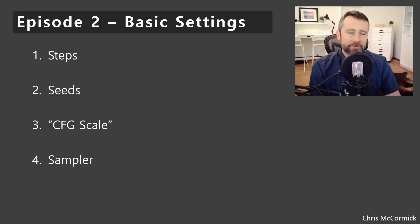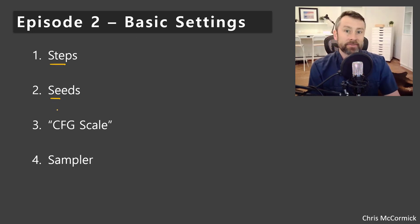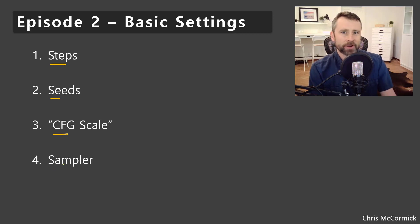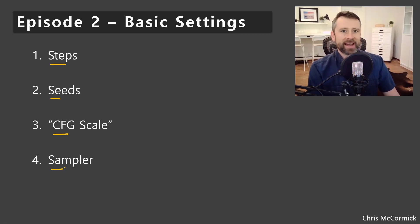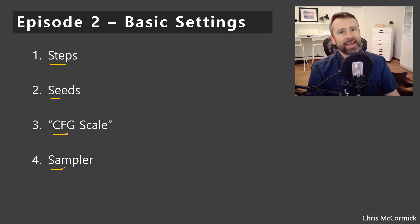Hey, welcome back. So we've looked at so many different ways of controlling our generations now. We've looked at the prompt first of all, but then in episode two here, we've looked at how the number of steps affects things, how the different seeds create totally different results, we've looked at the guidance scale, and there's one last choice for impacting what our generation looks like given these other settings.